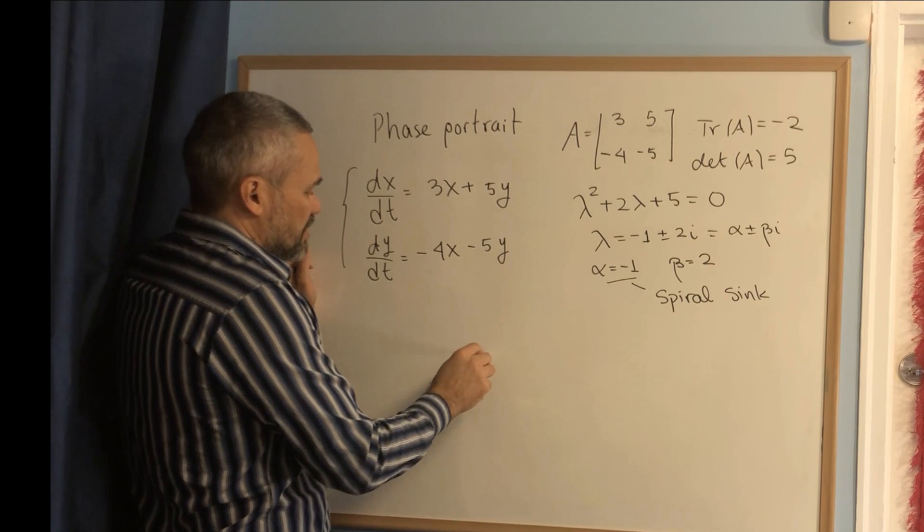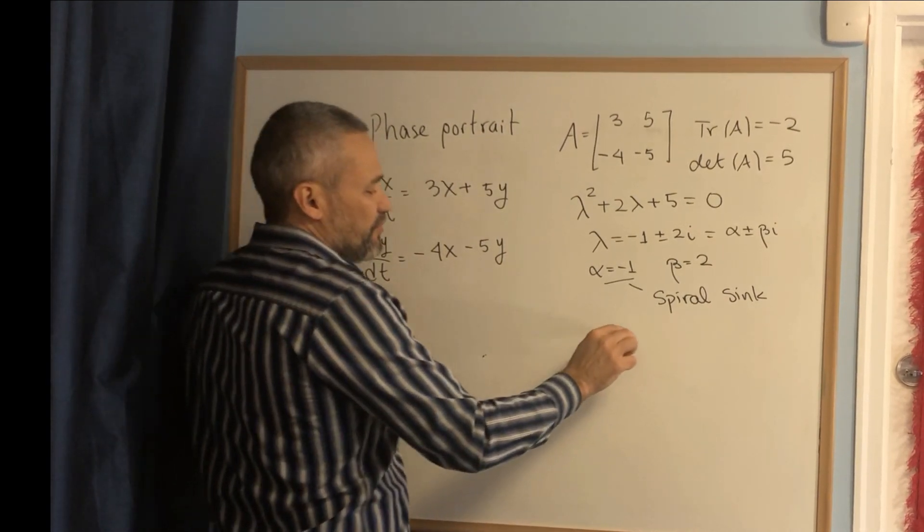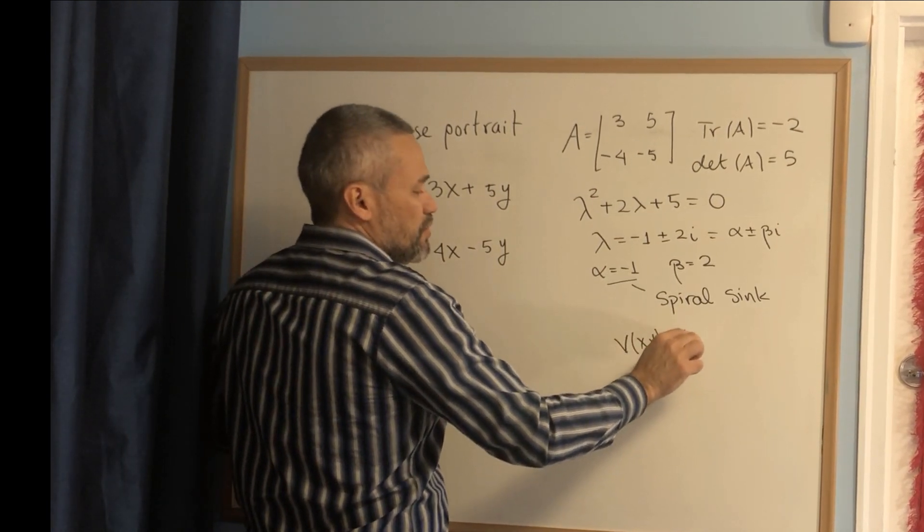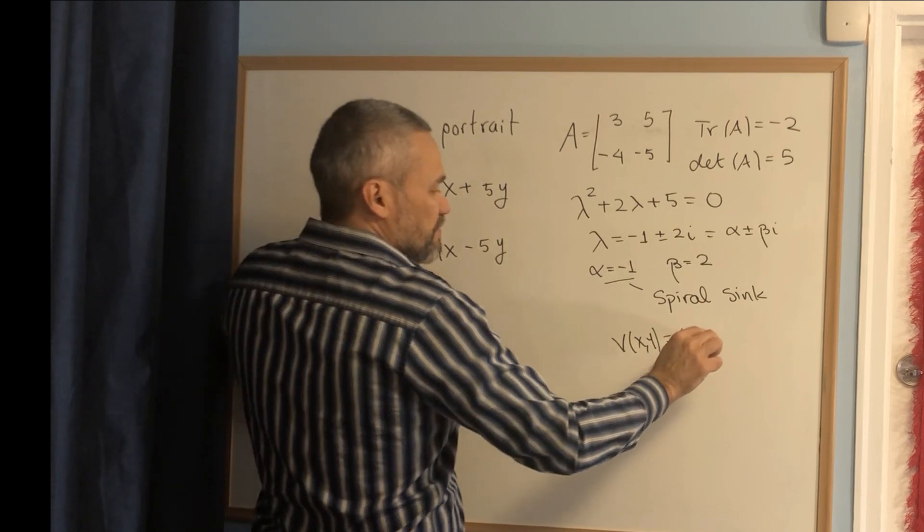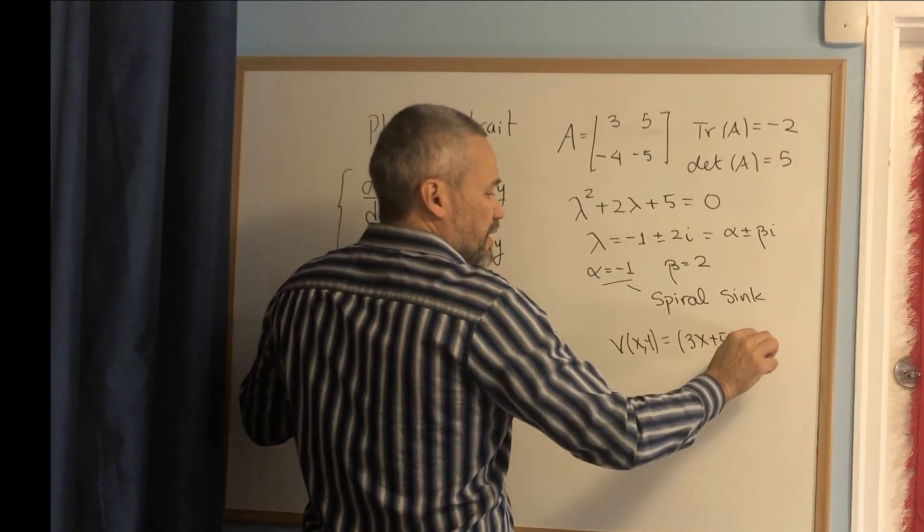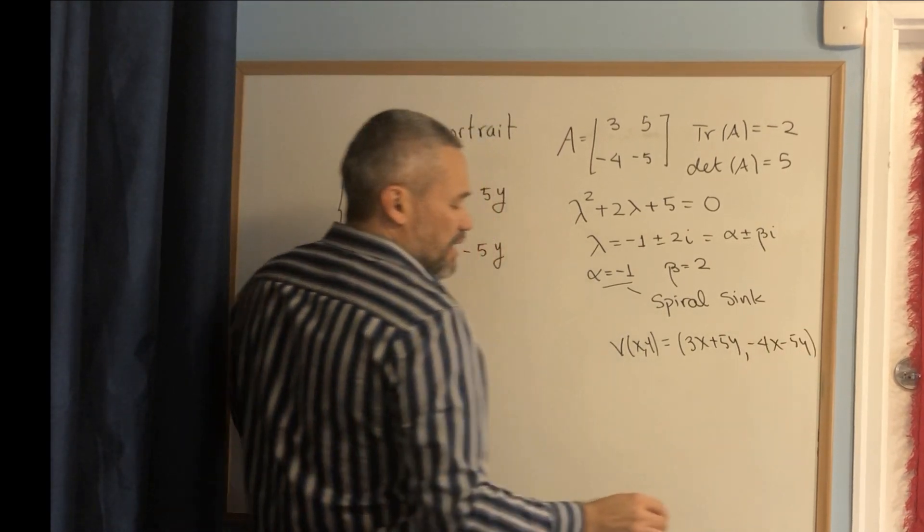We write the vector field of the system V(x,y) = (3x + 5y, -4x - 5y).